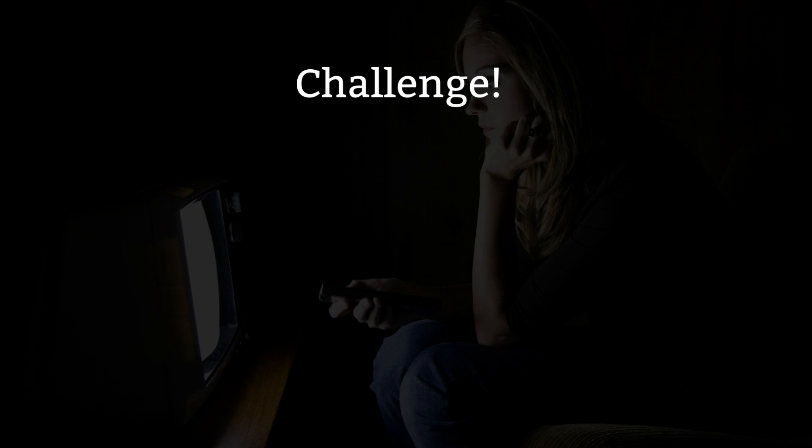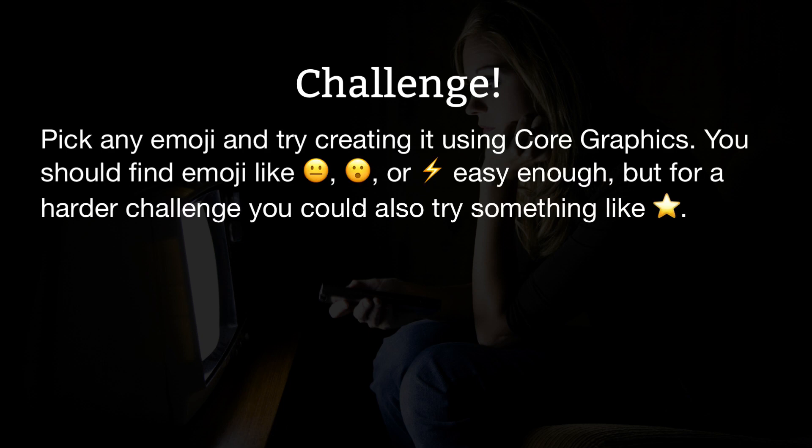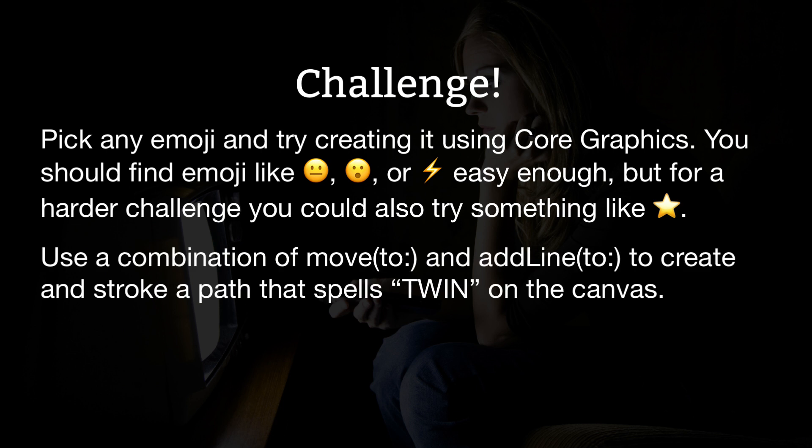Once again it's time for your challenge. One of the best ways to learn is to write your own code as often as possible, so here are three ways you can put your newfound knowledge to use straight away to make sure you fully understand what's going on. First, pick any emoji and try creating it using Core Graphics — some emoji aren't too hard but others like the star require more thinking. Second, use a combination of move to and add line to, to create and stroke a path that spells "twin" on the canvas.